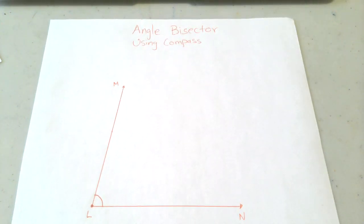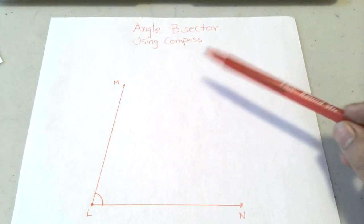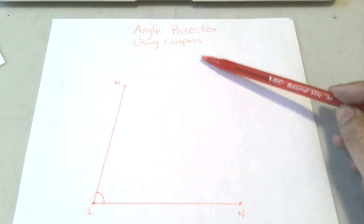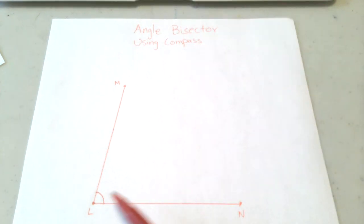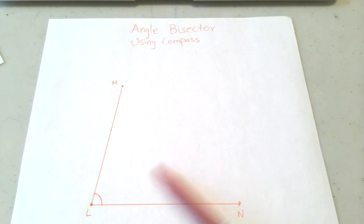All right, so now I'm going to show you how to find the angle bisector. Angle bisector means you have an angle over here, and you bisect it by cutting it into equal halves. There are two ways to do this.